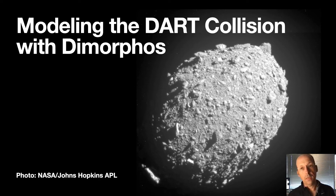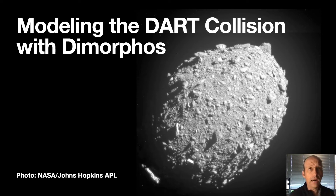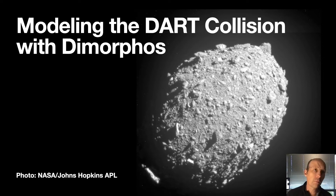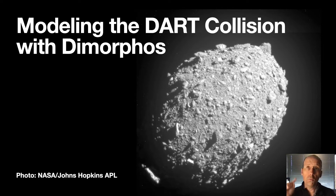This is Dimorphos. It's an asteroid, and it's a twin — that's the Greek name for twin. It's a binary asteroid system, and NASA crashed a spacecraft into it. This is the DART mission. I don't really want to talk about all the details of the DART mission, but I do know how to model stuff in Python, so let's model the DART collision with Dimorphos.